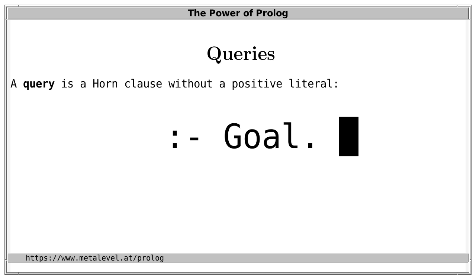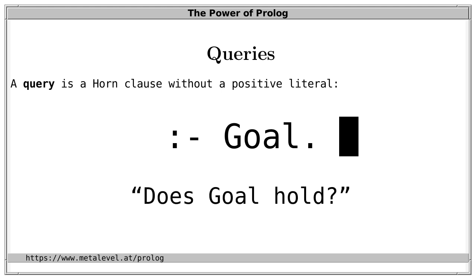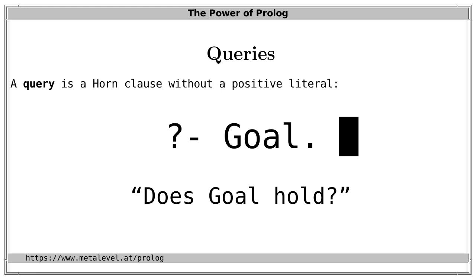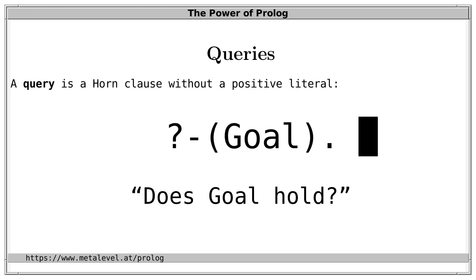We can think of a query as a question that asks: does the goal hold? To highlight this aspect, we can alternatively use a question mark instead of a colon: question-mark-dash goal. And since question-mark-dash is a standard prefix operator in Prolog, this is a valid Prolog term. If it were not a prefix operator, we would have to write it in functional notation: question-mark-dash of goal.